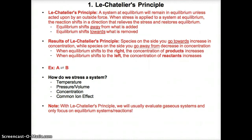As a result of Le Chatelier's Principle, species on the side you go towards will increase in concentration because you produce those species like products when you go towards them, while species on the side you go away from decrease in concentration because you consume them like reactants. When equilibrium shifts right, products increase; when equilibrium moves left, reactants increase.